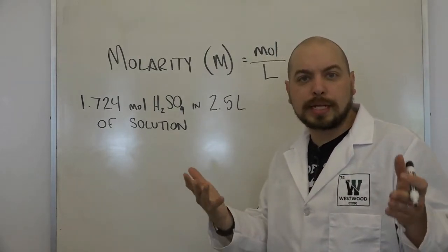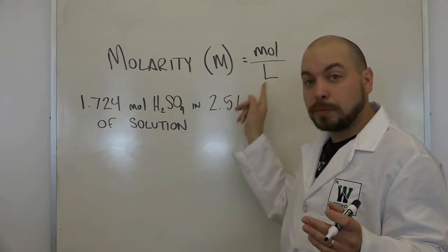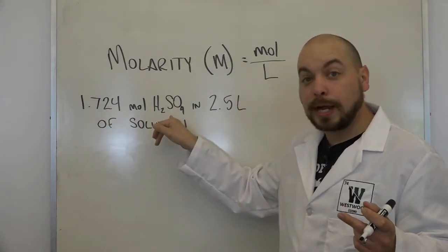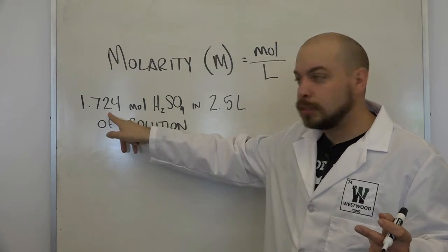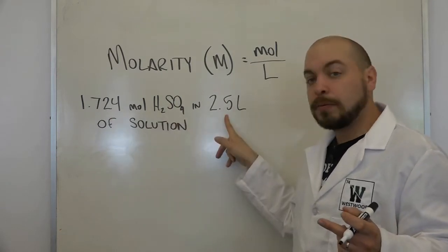This is a fairly simple setup because we know molarity is moles per liter, so all we have to do is take the number of moles of sulfuric acid, 1.724, and divide it by the number of liters, 2.5.